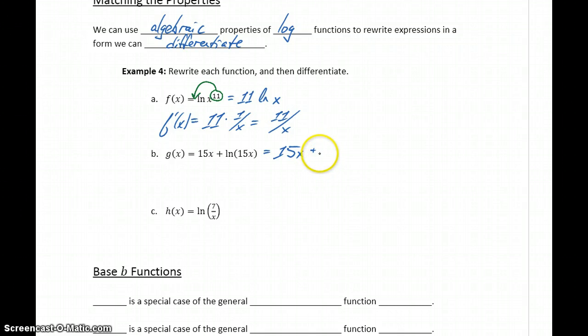But again, going back to some of our algebraic properties for logs, we can rewrite this as the natural log of 15 plus the natural log of x. So when we have the natural log of two quantities being multiplied together, we can split that up as the log of each of those and add those two terms together.